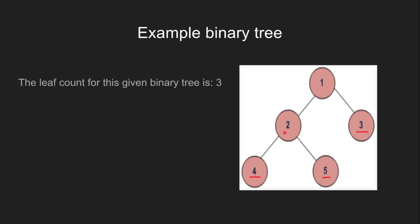The node 2 cannot be a leaf node since it has both left and right child nodes. 1 being the root cannot be a leaf node either. And so finally, the leaf node count for this binary tree is 3.